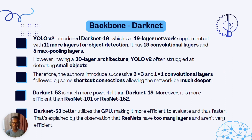The first backbone we'll talk about is DarkNet. YOLO v2 introduced DarkNet 19, which is a 19-layer network supplemented with 11 more layers for object detection. It has 19 convolutional layers and 5 max pooling layers, giving 90 layers used for extracting features, with 11 more layers added for object detection. When combined, we get a 30-layer architecture. YOLO v2 often struggled at detecting very small objects.